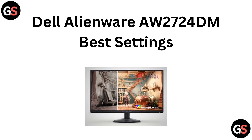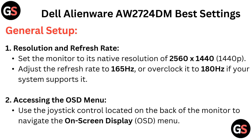Dell Alienware AW2724DM Best Settings. For general setup, set the monitor to its native resolution of 2560x1440p and adjust the refresh rate to 165 Hz, or overclock it to 180 Hz if your system supports it.